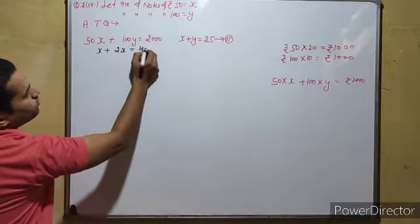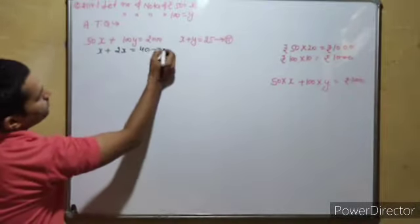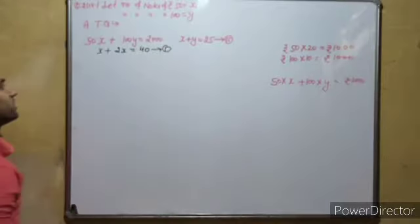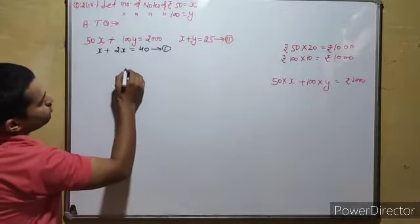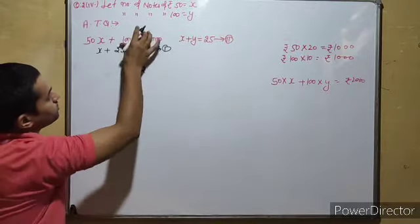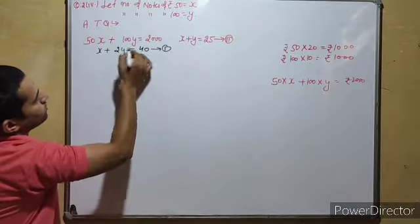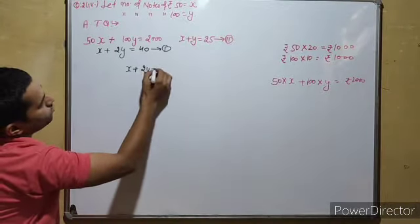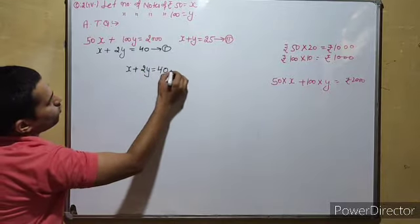2000 divided by 50 is 40, so this is equation number 1. Now, we have simplified the equation. We get x plus 2y is equal to 40.